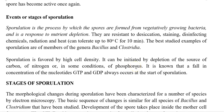Now we look at the stages of sporulation. Sporulation is defined as the process by which spores are formed from vegetatively growing bacteria, and it is formed in response to nutrient depletion — the first and foremost reason for spore formation. These spores are resistant to desiccation, staining, disinfecting agents, radiation and heat; they can tolerate up to 80 degrees centigrade for 10 minutes even in an autoclave. The best studied examples of bacteria for sporulation include Bacillus and Clostridia.